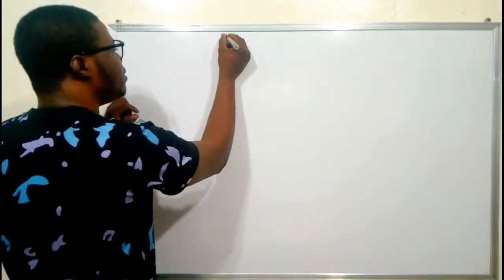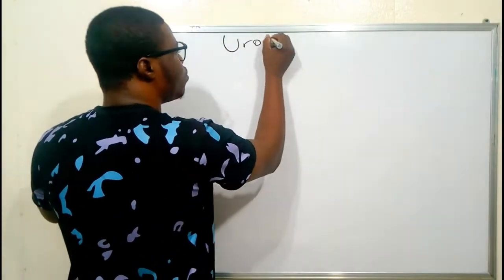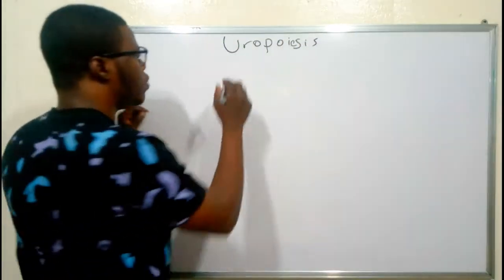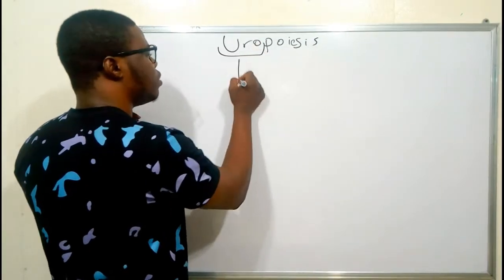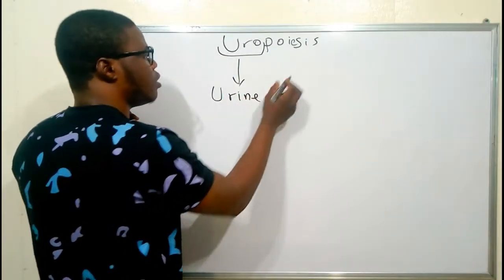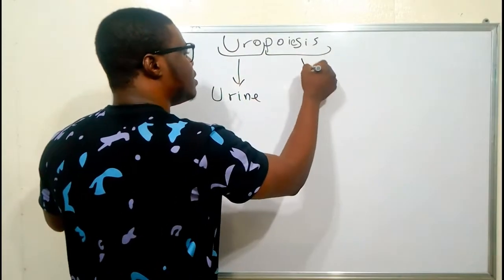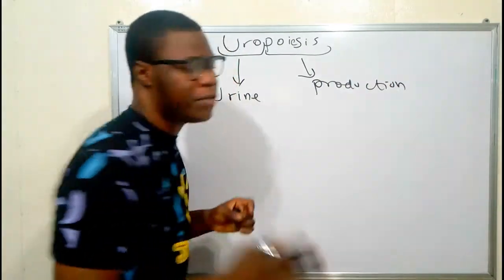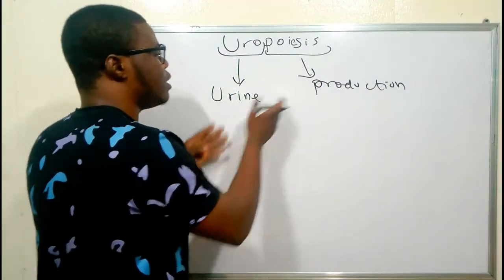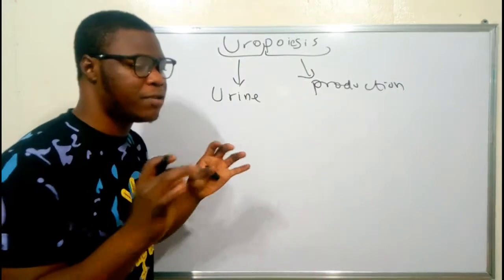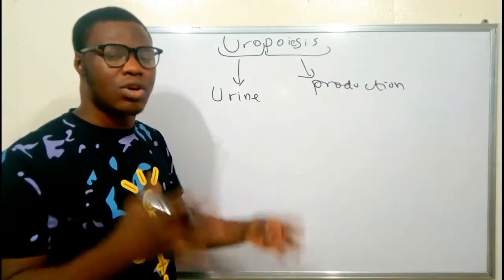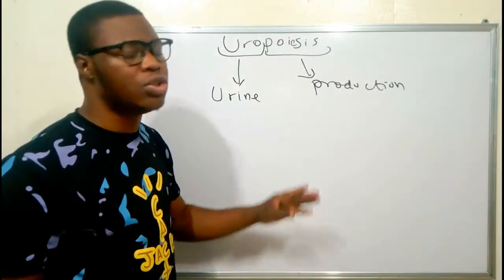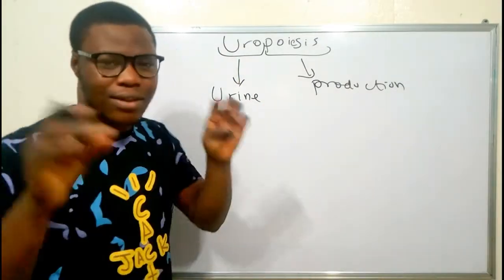We are going to be talking about uropoiesis. The word 'uro' denotes urine and the word 'poiesis' means production. So uropoiesis means urine production — simply put, it is the process of urine formation. This urine formation or urine production has three stages.